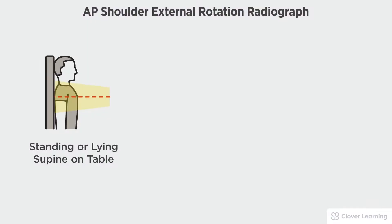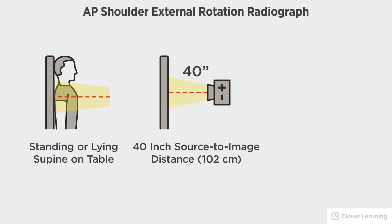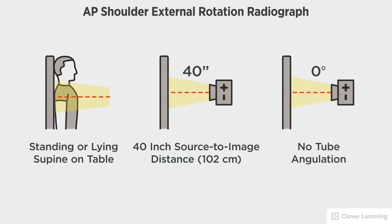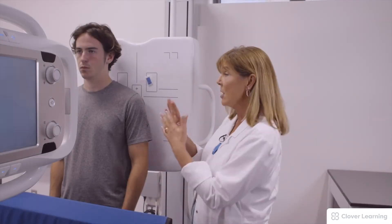In this view we will be demonstrating the AP shoulder external rotation. The AP shoulder external rotation should be performed with the patient standing at the upright bucky or lying supine on the radiographic table with a 40 inch source to image distance and no tube angulation. I have placed my IR